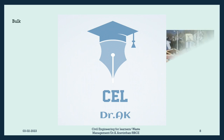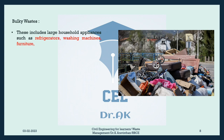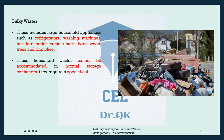Bulky Wastes: These include large household appliances such as refrigerators, washing machines, furniture, crates, vehicle parts, tires, wood, trees, and branches. These household wastes cannot be accommodated in normal storage containers; they require a special collection mechanism.